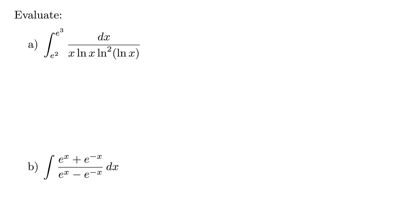Here we have a couple of interesting integrals to evaluate. Part A is the integral from e squared to e cubed of dx over x times natural log x times natural log squared of natural log x. This is truly an incredible integral — it doesn't get much better than this.